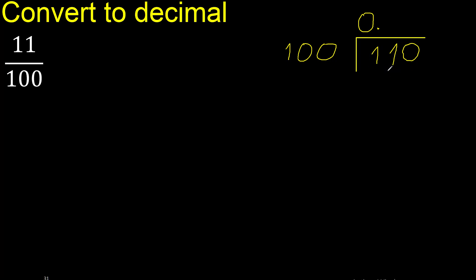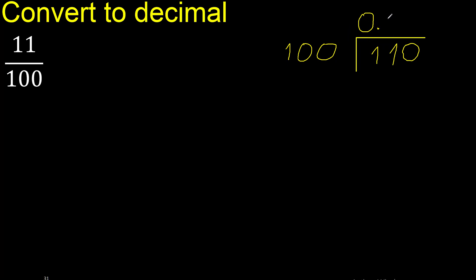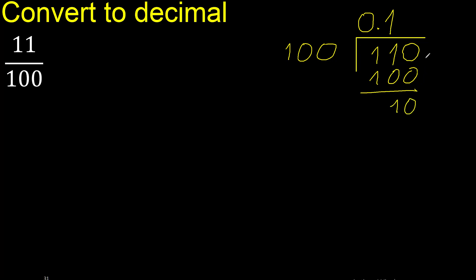110 is not less, therefore 100 multiplied by which number is nearest to 110 but not greater. Multiplied by 2 is 200, which is greater. Therefore multiplied by 1 is 100. Subtract: 10. There is no number that goes down, therefore complete — always complete with 0.